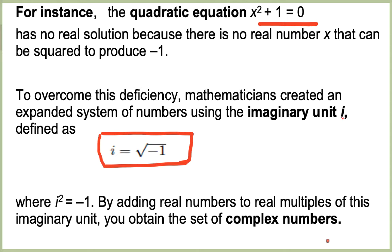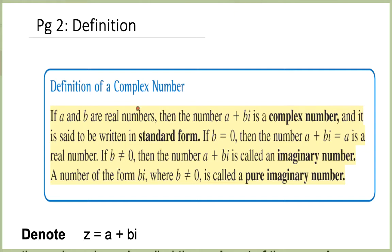So let's define what a complex number is. By definition, a complex number is a number of the form a plus bi, and this is called the standard form. If b is 0, then a plus bi equals simply a — this is a real number. Whereas when b is not equal to 0, then a plus bi is called an imaginary number. And the third form is when a equals 0, then we get a purely imaginary number.